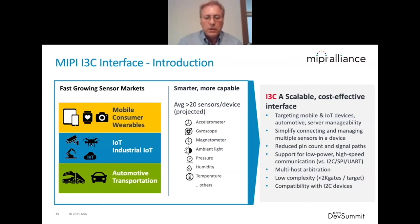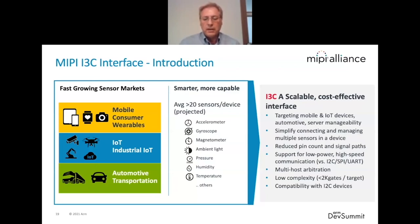I3C was developed to answer the need to manage a large number of sensors proliferating across different markets — mobile, IoT, automotive, and so on. The goal for I3C was to keep it simple, but with sophisticated functions that would suit all these different applications. It is also simple at the physical level: only two wires are used in I3C, with a low gate count for implementation in target devices.